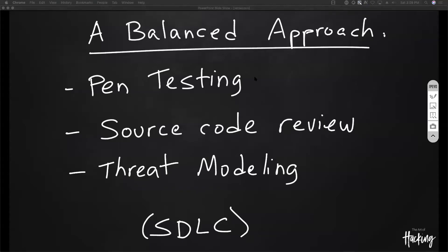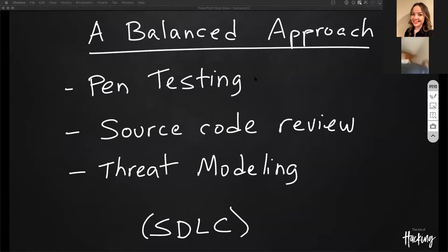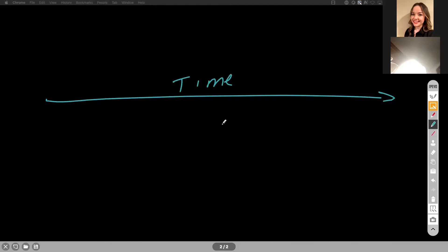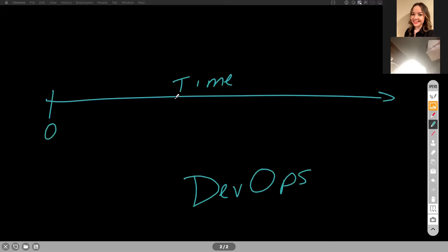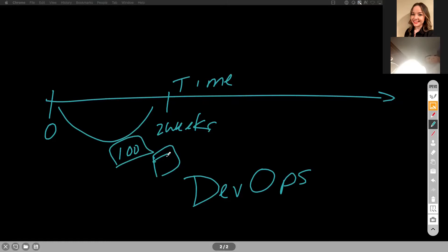Some people say pen testing is obsolete in the cloud because of DevOps. If you start on day zero and do a pen test for two weeks, by the time you find 100 vulnerabilities and write a report, they've probably already instantiated new containers, new patches, or introduced new vulnerabilities. That's why people say you have to move security to the left — that's a big buzzword nowadays.